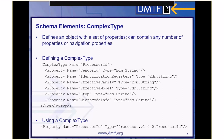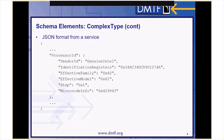A complex type defines an object with a set of properties. It can contain any number of properties or navigation properties. A complex type is given a string name so that it can be referenced by properties using this data type. In this CSDL example, we defined a complex type called ProcessorId, and it contains the properties VendorId, IdentificationRegisters, EffectiveFamily, EffectiveModel, STEP, and MicroCodeInfo. In some other portion of the schema file, we defined a property named ProcessorId with the data type processor.v100.ProcessorId. The JSON payload for a service implementing this schema would contain the property ProcessorId as an object containing those properties, all of which hold strings.